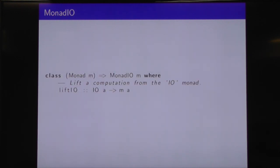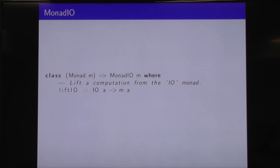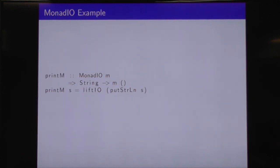What about MonadIO? This is another type class from the MTL. It says M is a MonadIO if you can take an IO action that produces As and lift it up and embed it into the M monad. So we can perform a bunch of IO and lift it into this M monad and combine it with all our other things. A simple example: if you give me a string, I can print that string out for any monad that lets you do IO — not just the IO monad, but any monad transformer stack that happens to have IO in it.